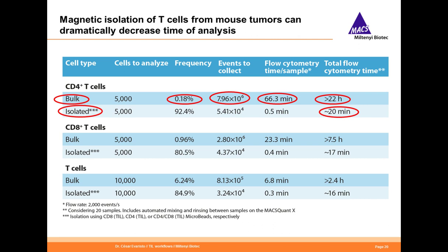We calculated the amount of time required to analyze 5,000 cells of interest from those samples, with or without magnetic isolation. Without enrichment, to analyze 5,000 CD4 T cells from a 0.18% frequency, you'd need to acquire almost 8 million cells. At a flow rate of 2,000 events per second, that would mean over one hour of FACS time per sample. If you had 20 samples, you could be spending over 22 hours acquiring all samples — or, more realistically, you would reduce the number of cells acquired and compromise data quality. However, by magnetically enriching the T cells, we can acquire the same number of cells of interest in just about 20 minutes. These 20 minutes already include automated mixing and rinsing between samples on the MACSQuant.